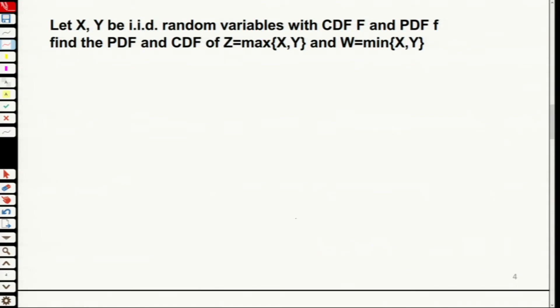So first let's have a look at Z. So Z here equals to max of X and Y. Now we want to find Fz. Fz is actually probability capital Z less than or equal to lowercase z.